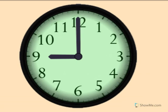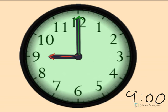9 o'clock. Show me 9 o'clock on your clock. The little hand tells the hour. The little hand is pointing to the 9. The big hand tells the minute. Big hand pointing straight up is o'clock.